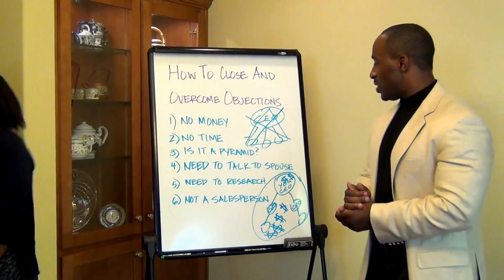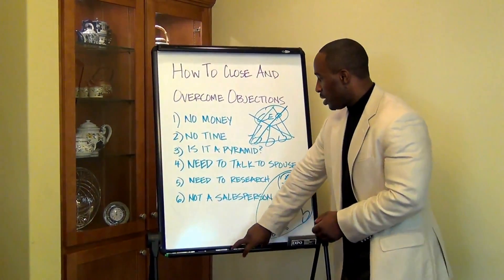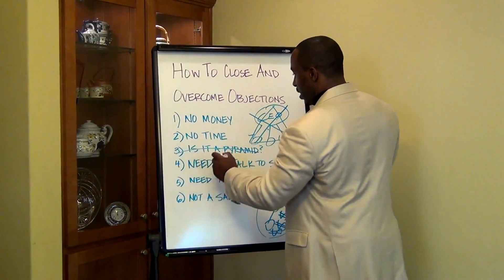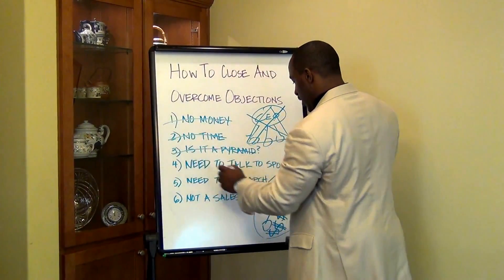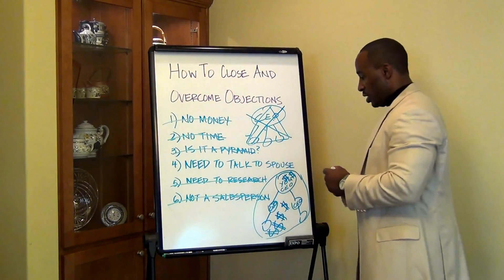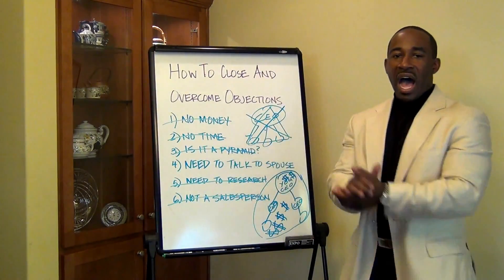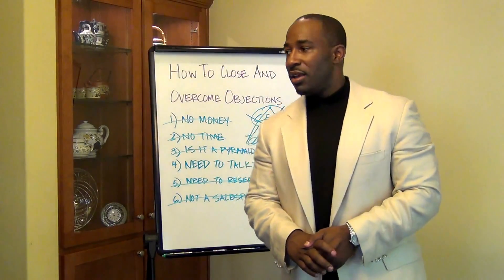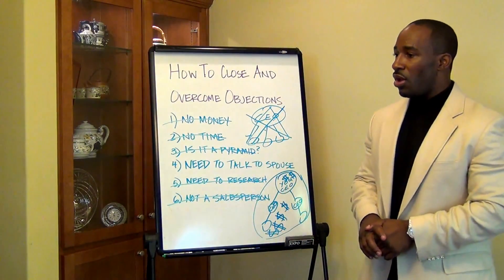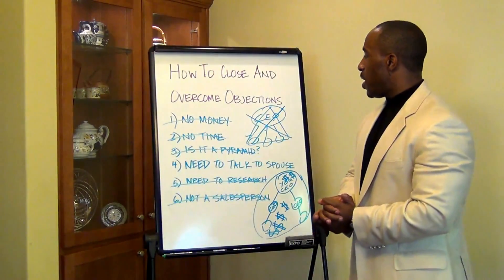We've done the pyramid, the no time, the no money, the research, and the salesperson. Last one to do is the spouse. We're going to bring up Matt. Matt, let everybody know your name, where you're from, your background, and how long you've been in Organo Gold. 'Matthew Sterling Fuller. My background is in construction. I've been around about 90 days, Organo Gold, from Sacramento, California.' 'What do you like best about Organo Gold?' 'Simplicity.' 'All right, we've got one last objection to knock out.'